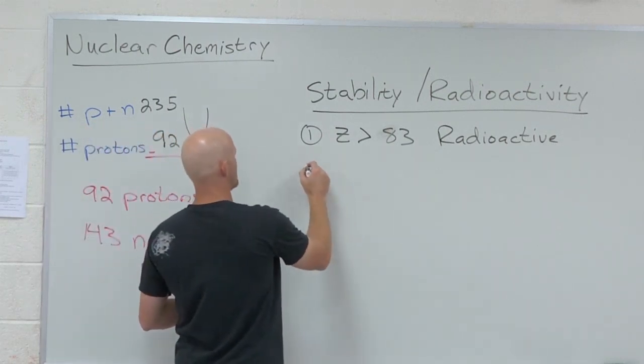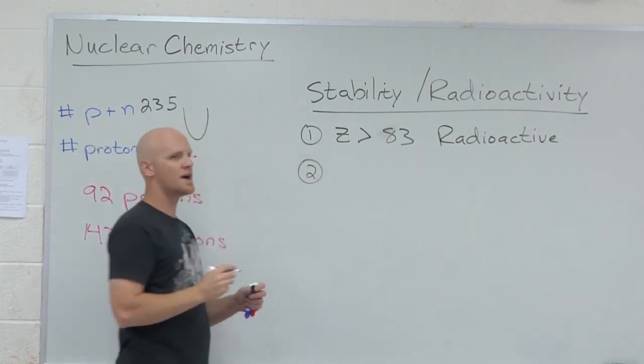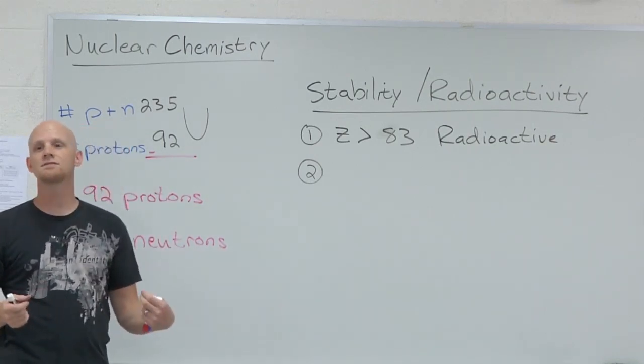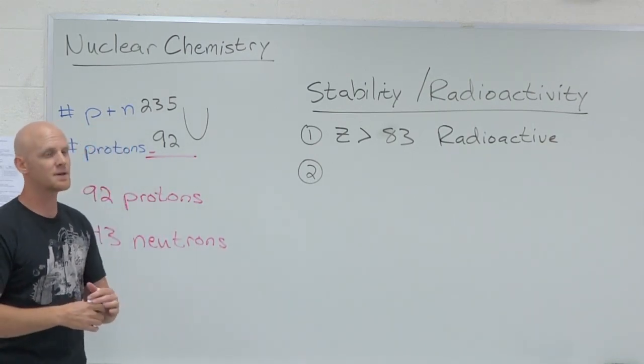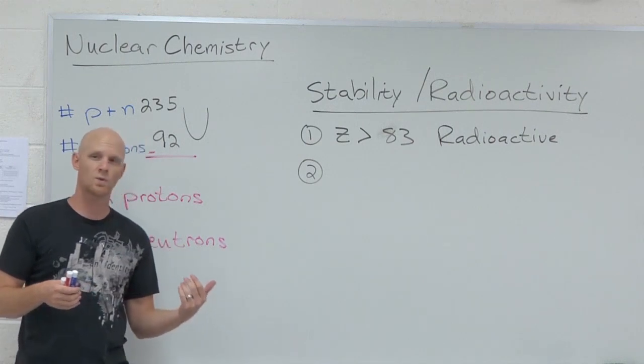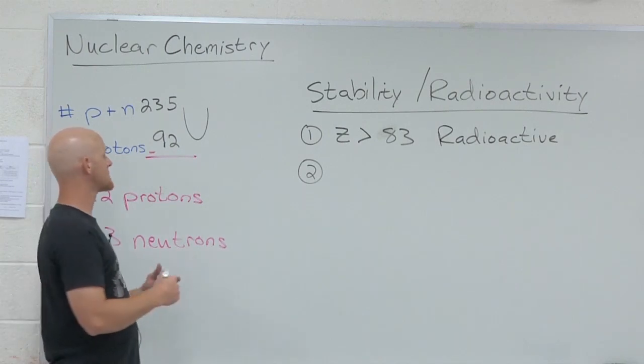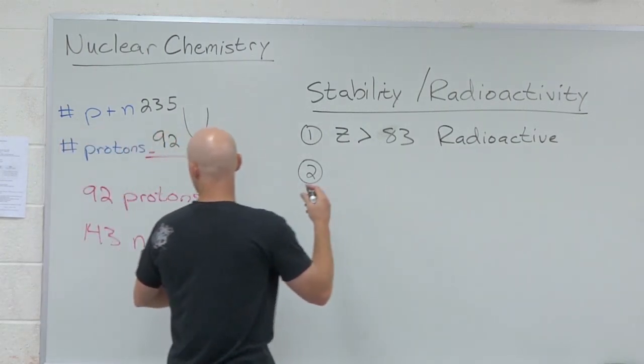So the first rule really makes it easy to peg out something that is for sure radioactive. Now the next three rules though, rather than talking about what's going to be radioactive, what's not going to be, we can only talk about trends. And I'm going to give you some trends for stability. And if I'm giving you trends for stability, then what would you be looking for for radioactivity? The exact opposite.